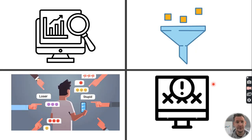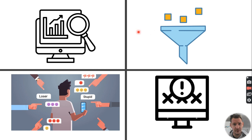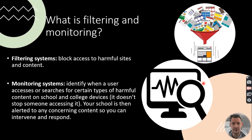In this video briefing, I'd like to draw attention to some particularly prominent issues in online safety at the moment. The three main areas I'm going to go through are: filtering and monitoring, online bullying, and sexting.